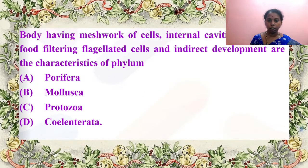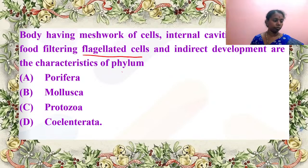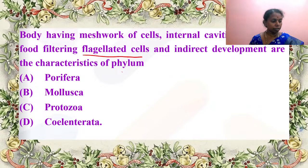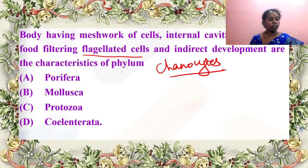Body having meshwork of cells, internal cavities lined with food-filtering flagellated cells, and indirect development are characteristics of which phylum? The flagellated cells are choanocytes. It is A — Porifera — where you have choanocytes as a characteristic feature. Excellent answer by Parthas Arati.